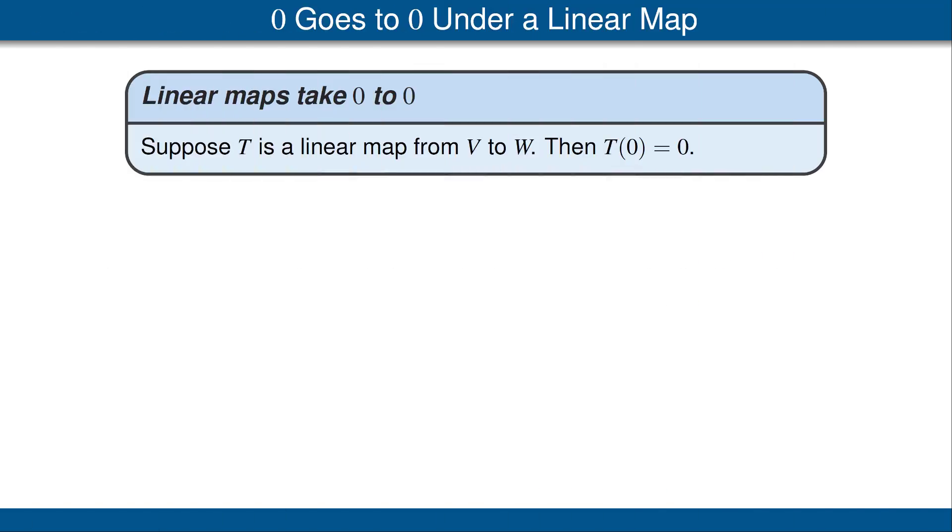Linear maps take 0 to 0. Specifically, suppose T is a linear map from V to W. Then T(0) is equal to 0. The 0 on the left side of this equation is the additive identity in V, and the 0 on the right side is the additive identity in W. This result is easy to prove.